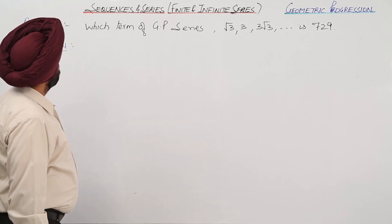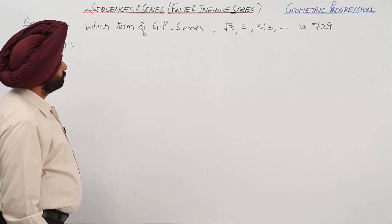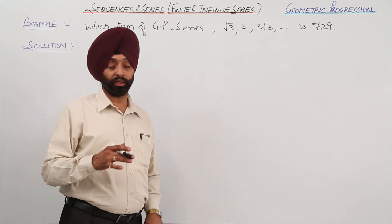In this example, we have to find which term of the given series is 729.